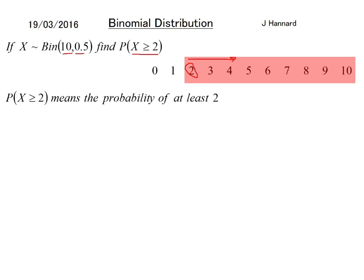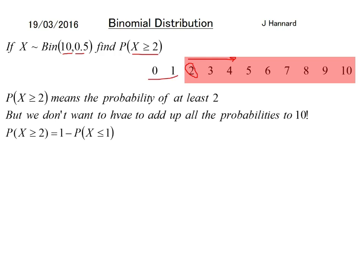But working again with their probability, you could have done 2, 3, 4, 5, 6, 7, 8, 9, 10, add them all together. But it's a lot less work if we just do 1 minus 0 and 1.